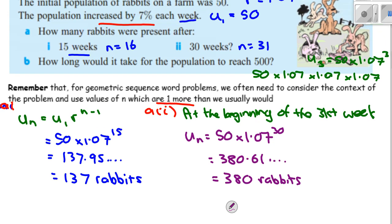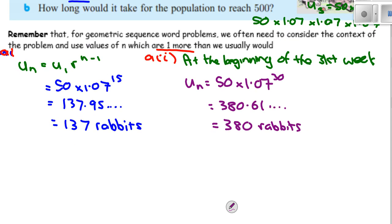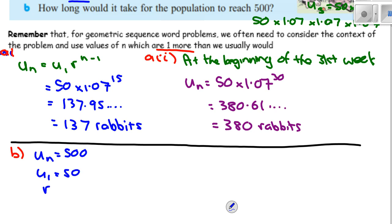Now we're going to have one where we're going to need to solve for n. How long would it take for the population to reach 500? So what in the formula does the 500 represent? uₙ, uₙ, good yeah. So uₙ in that case.